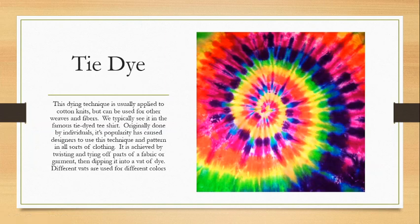Tie-dye is a dyeing technique usually applied to cotton knits but can be used for other weaves and fibers. It's typically seen in the famous tie-dye t-shirt. It's achieved by twisting and tying off parts of a fabric or garment, then dipping it into a vat of colored dye — different vats for different colors. Once dried, the fabric is untied and untwisted, resulting in that distinctive pattern. Tie-dye is very much associated with the hippie movement of the 1960s.